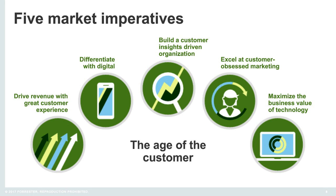We've been tracking what we call our five market imperatives. For 2017, the things most critical to businesses as they look to better serve their customers and prospects are: how can we drive revenue with a better customer experience? How can organizations differentiate themselves using digital? How can organizations build a customer insights-driven organization — really understanding how to tap into the content and data they hold to make better decisions? How do they excel at customer-focused marketing? And how do we really maximize the business value of the technology decisions that we make? These are the five high-level market trends shaping the business and technology climate.